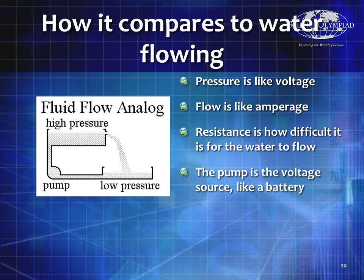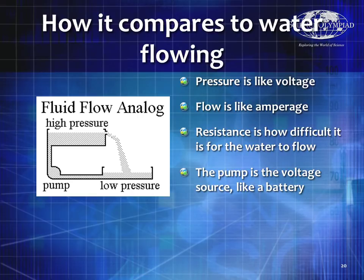A lot of people like to compare electricity to water flowing. Think of pressure as voltage, flow as amperage, and resistance as how difficult it is for the water to flow — and the pump is like the voltage source (a battery). In a closed circuit, we start at a very low voltage, go through our battery which raises it to a high voltage — just like a pump raises pressure. Current then flows through a hole: if the hole is really small it has high resistance and less current flows; if the hole is really big it has very low resistance and a lot more current flows.